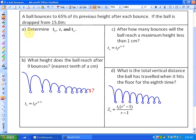The first term here is the height that it's dropped from, so t₁ is equivalent to 15. The common ratio here is 0.65 because every bounce is reaching 65% of its previous height. So the general formula would be that tₙ is equivalent to 15 times the common ratio to n minus 1.